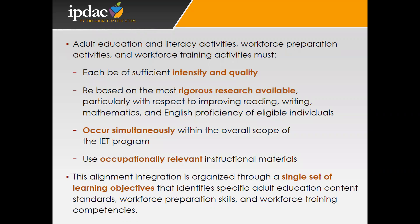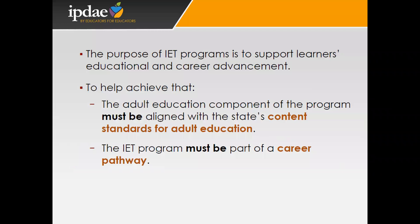Both components — literacy and workforce training — must occur simultaneously within the overall scope of the IET program. A big selling point to present to students is the time-saving aspect: you're taking a two-year process and condensing it into a year or a year and a half, depending on student proficiency, by offering both sets of learning objectives simultaneously. We also need to be using occupationally relevant instructional materials and supplies, with instructors who are closely tied to their current industry. All programs must be aligned with the standards for adult education as provided by the state.